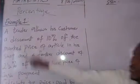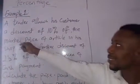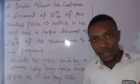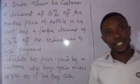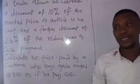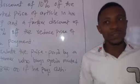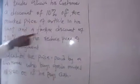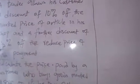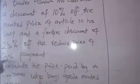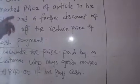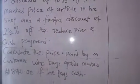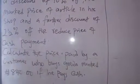The question says: a trader allows his customer a discount of 10% of the marked price of articles in his shop. Discount is the deduction from the normal price of goods. If they are selling something for 200 Naira and somebody says he gives you a discount, it means the person will reduce the price for you. There is a further discount of 2.5% of the reduced price for cash payment. So if you buy the goods, he will give you 10% discount, and if you pay cash, he gives you another 2.5% discount.